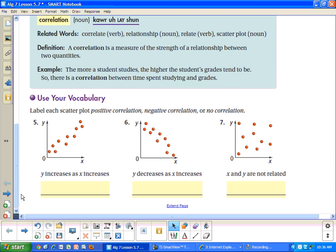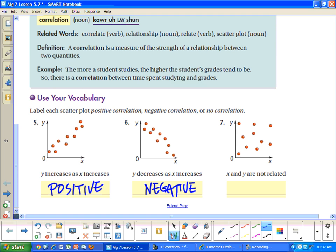Some words you have to know are correlation. If there's a correlation, you will see a pattern in the dots. The correlation is a measure of the strength of a relationship between two quantities. A positive correlation means that as X increases, Y increases. A negative correlation is when the dependent variable decreases as the independent variable increases, and no correlation would be there's no pattern at all. A positive correlation would look like this. A negative correlation would look like this. And no correlation would look like this.